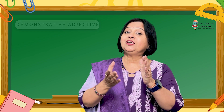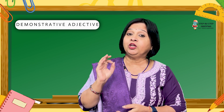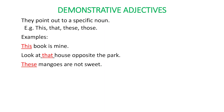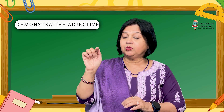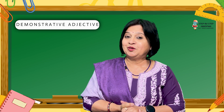The fourth kind of adjective is the demonstrative adjective. Demonstrative adjectives always point out to a certain noun: this, that, these, those. For example, 'this book is mine' or 'that house opposite the park belongs to my neighbor.' This way you can always point out things to identify the demonstrative adjective.